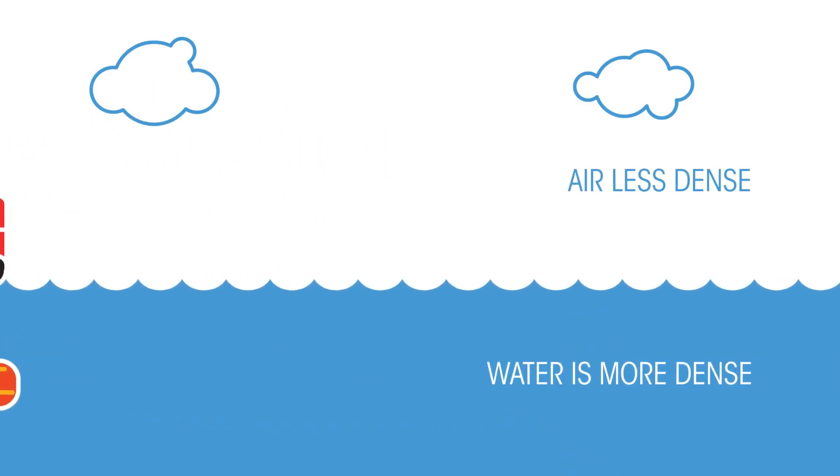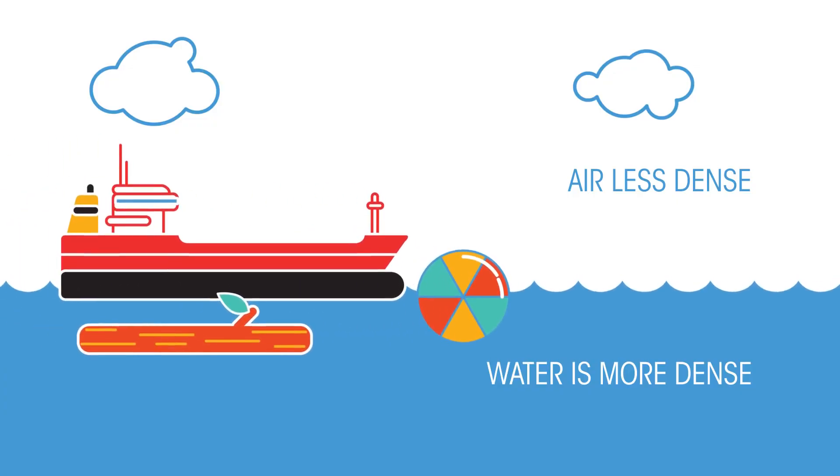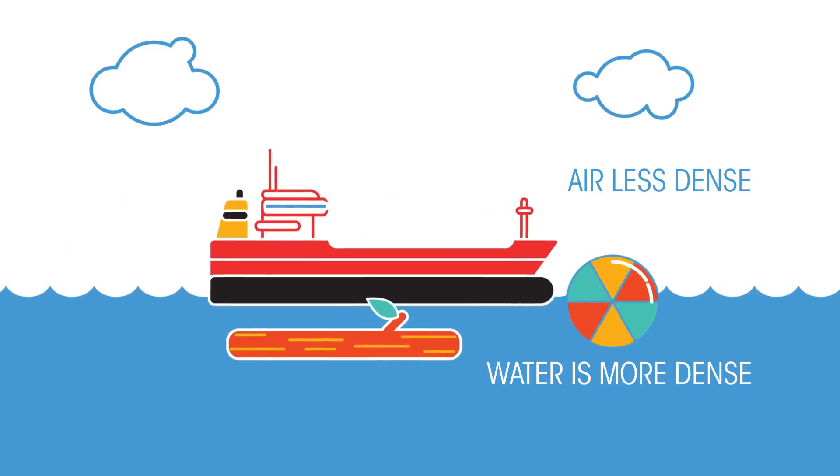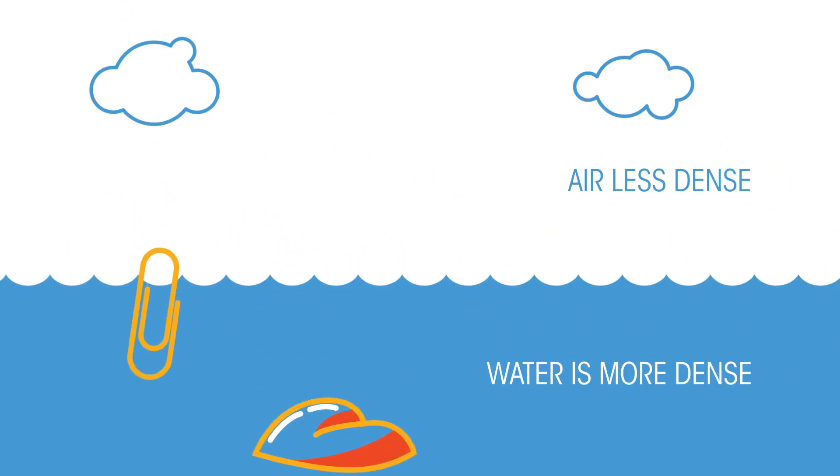Air is less dense than water. The beach ball, boat and wooden log are also less dense than water, hence they float. But the pebble and the paperclip are more dense than water, and so sink.